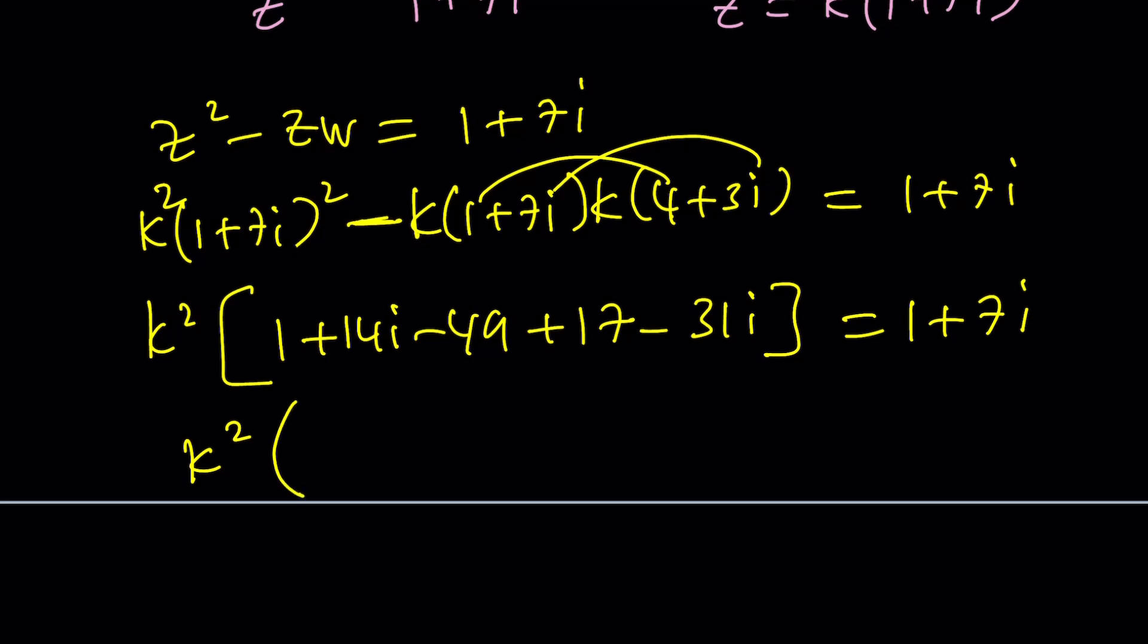So after distributing everything, I could probably just pull out k². And then when I square this, I'm going to get 1 + 14i - 49. And then the product is going to give me 4 and then minus 21. That's going to be a negative 17. But you're going to negate it plus 17. And then I should be getting something like 3i + 28i, which is 31i. And that should be a minus sign as well, right? Because we're negating because of this minus sign. I hope I didn't make any mistakes. But here, we should be able to find k² from here. -31 + 14i minus -17 - 31i. And that's equal to 1 + 7i.